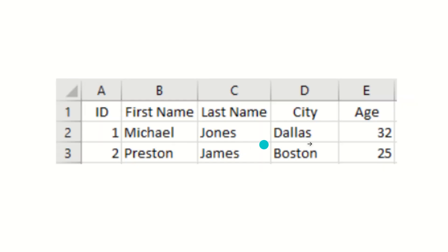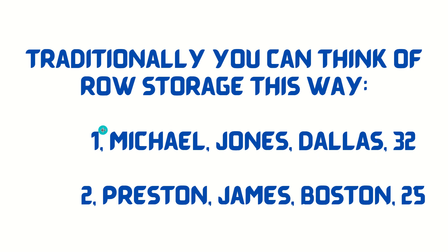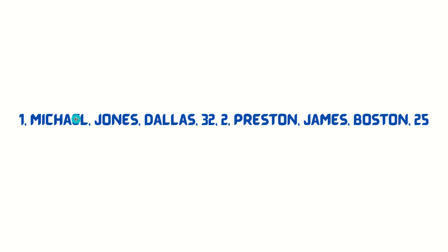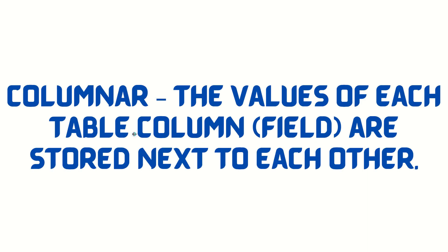Let's look at an example. Suppose we have data with five columns and two rows. In row format, we store: 1, Michael, Jones, Dallas, 32 — first row — then 2, Preston, James, Boston, 25 — second row. We can represent this visually in the order it will be stored in memory: 1, Michael, Jones, Dallas, 32, then once the last column ends, the second row's first column starts immediately. This is how the data gets stored in memory.